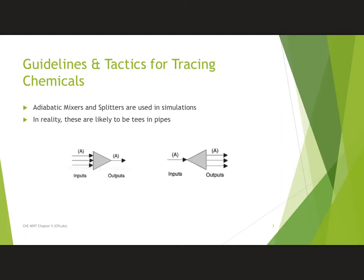The flow in general on a PFD is more or less from left to right across the page. One of the things you'll frequently see is various mixers and splitters. They may be tees in a pipe, but we're going to call them a mixer or a splitter in our simulation. Think of them as a tee in a pipe that's either bringing flow streams together or separating them.